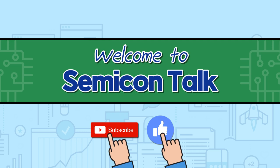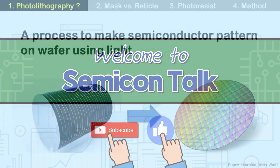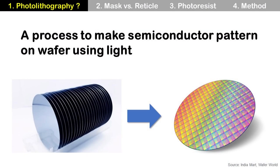Hello everyone. Welcome to SemiconTalk. Today's topic is photolithography. Photolithography is a process to make semiconductor patterns on a wafer using light. The wafer will have semiconductor patterns on top through the photolithography process.